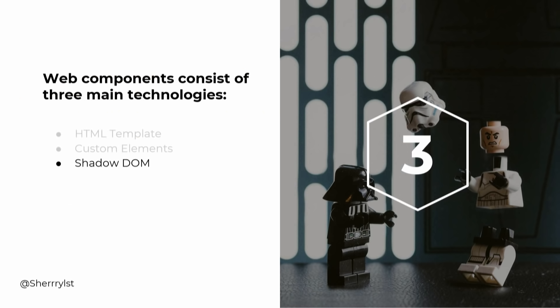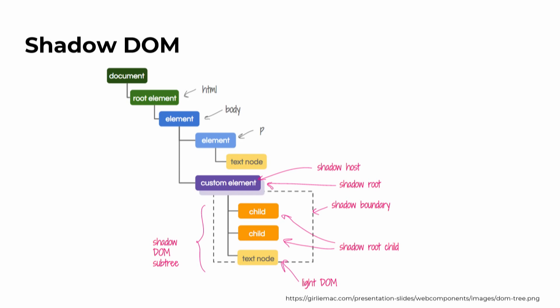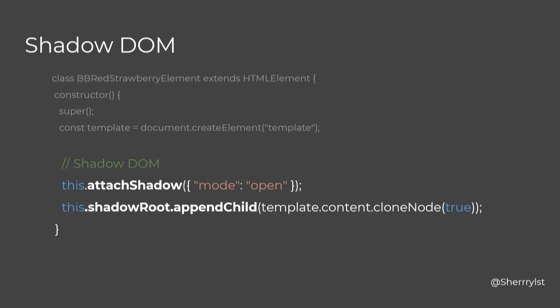Shadow DOM is here to fix that problem. It creates a boundary around our custom element, providing the encapsulation we need so nothing leaks in or out. To add it, inside our custom element constructor we say we want a Shadow DOM, and when we clone our template we attach it to the Shadow DOM instead of directly to the regular DOM. That's all — encapsulation applied.